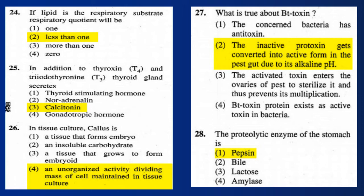Question 26: In tissue culture, callus is an unorganized, actively dividing mass of cells maintained in tissue culture. Question 27: What is true about Bt toxin? Answer: The inactive protoxin gets converted into active form in the pest gut due to its alkaline pH.